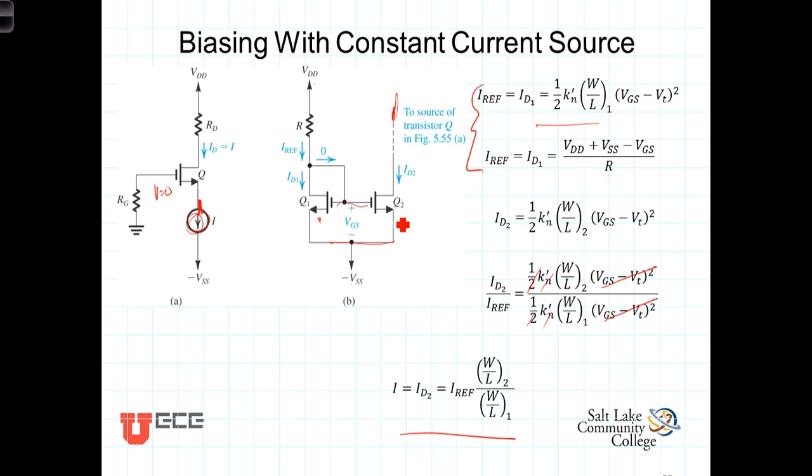It's simply whatever the current is flowing through this resistor and this saturated transistor. Any load that comes on this current mirror on this current source is coming through this transistor and this current is held constant by the gate-to-source voltage.